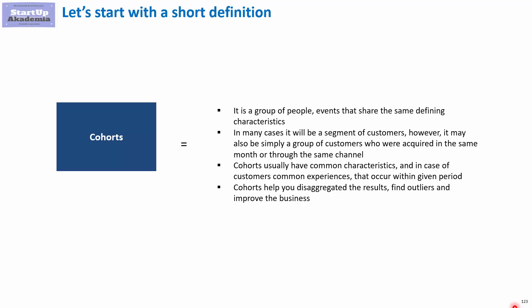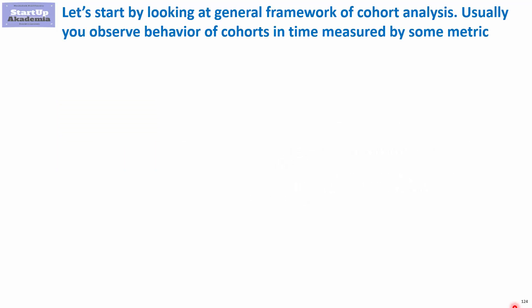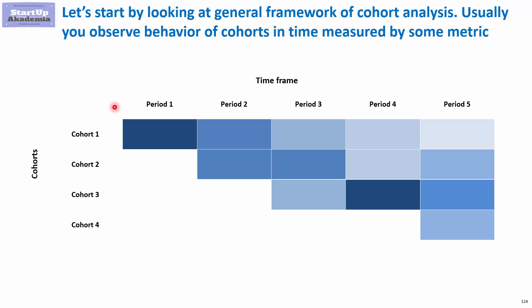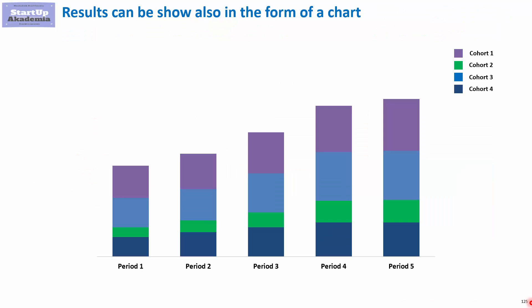Now let's move to the general concept of cohort analysis. Usually you would look at the behavior over time of different cohorts. Obviously, you have to pick a specific KPI, map it, and then you can observe the differences. This can be done in a form where we simply map the behavior of different cohorts in time, or you can also present it in the form of a chart.